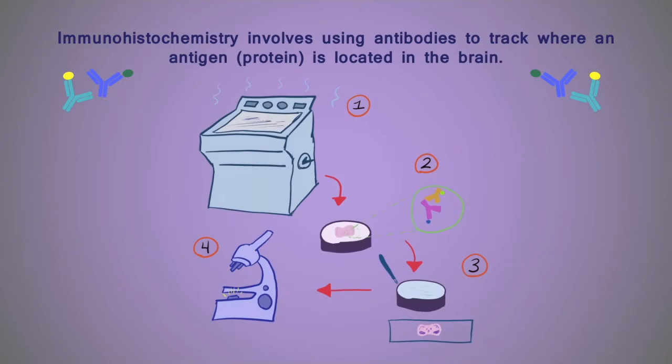The entire process can take anywhere from a few hours to several days, and involves multiple steps, starting with the acquisition of the tissue sample. A special instrument called a cryostat is commonly used to create precisely measured and extremely thin slices of brain tissue for the purposes of immunohistochemical staining.